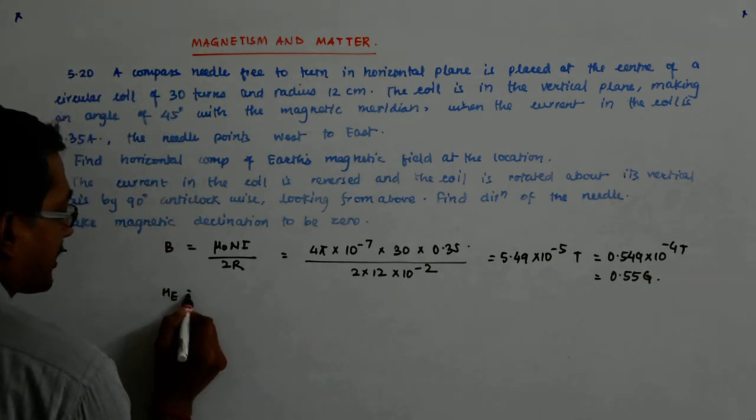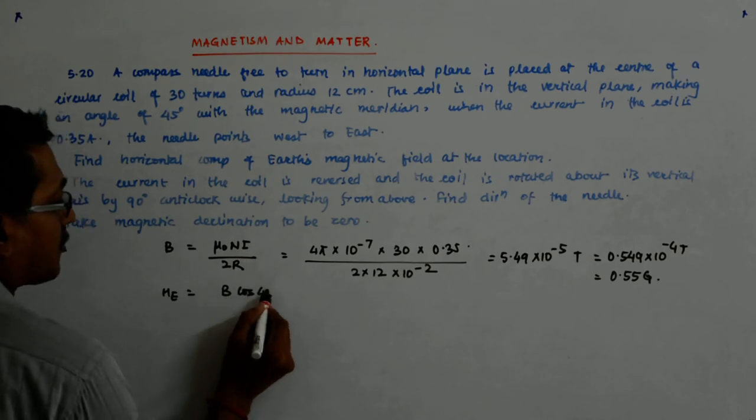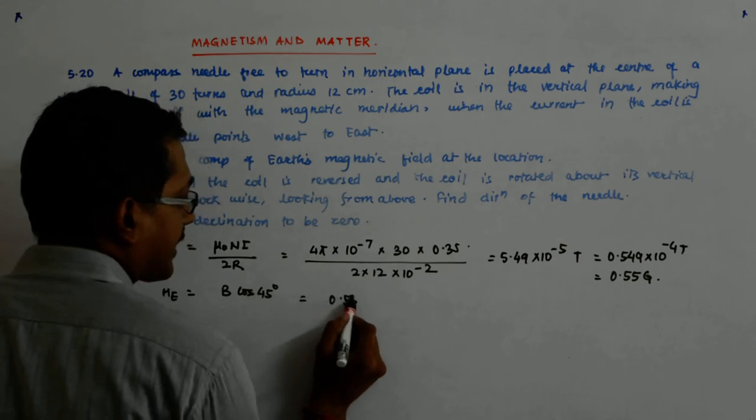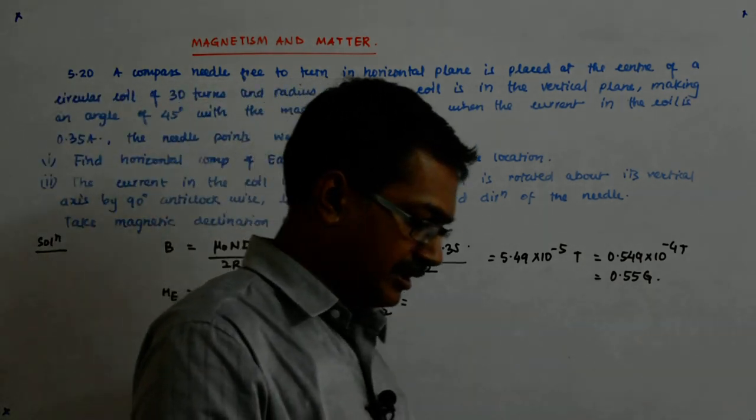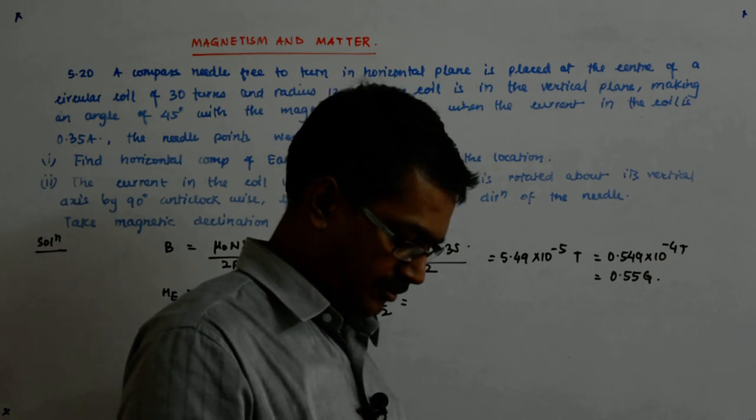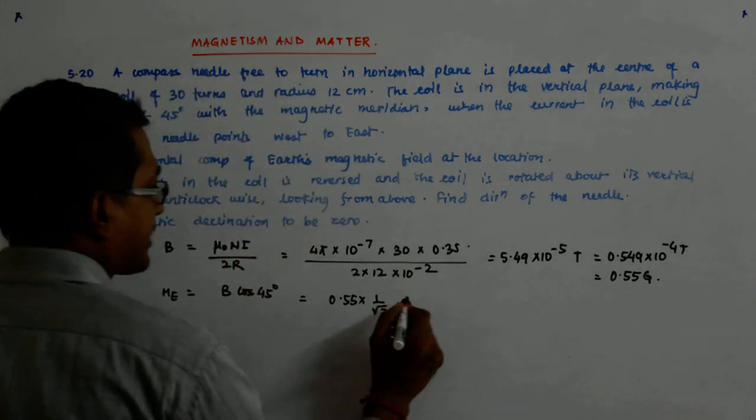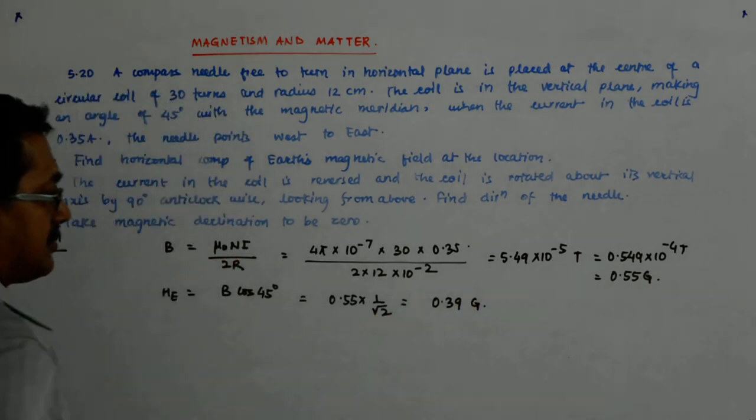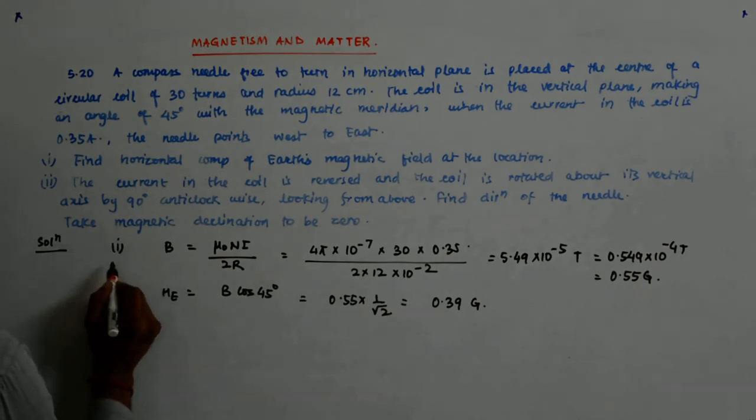What is my earth's horizontal magnetic field? As we just saw, is B into cos 45 degrees. So that is 0.55 into 1 upon root 2. So that gives me 0.55 into cos 45. So that gives me 0.388, 0.39 Gauss. That's all. So this was my first part.